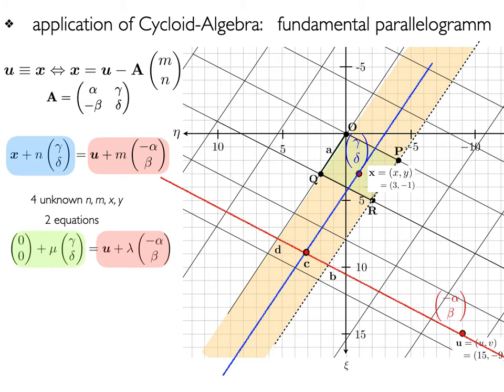Which is meeting the red line in the point d. Then we compute the solutions lambda and mu. Taking the floor of lambda, we obtain the integer parameter 3, such that from u, adding three times the vector minus alpha beta, we come to c.